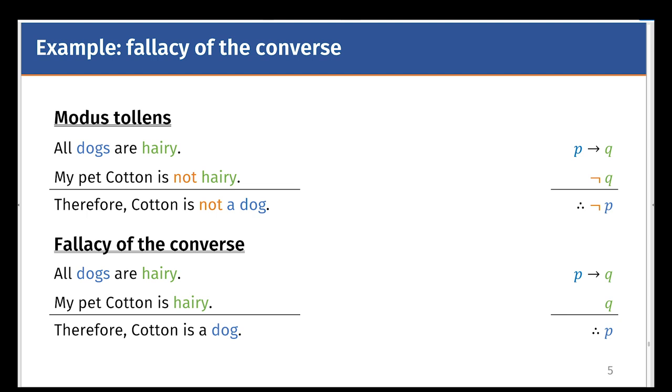Here's an example for the fallacy of the converse. In the fallacy of the converse, it is invalid to say all dogs are hairy, my pet Cotton is hairy, therefore Cotton is a dog. This is invalid because just because she said that Cotton is hairy doesn't mean it's going to be a dog. It might be a hairy cat.